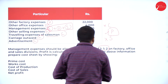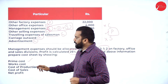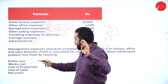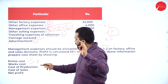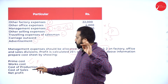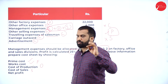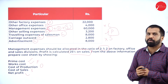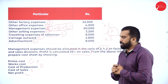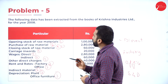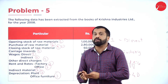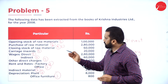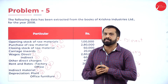From the above information, step 1 is prime cost, step 2 is work cost — work means factory. Then cost of production, which is office. Then cost of sales, which is selling and distribution. Your final answer is nothing but net profit. Please take a screenshot of the question and try to work out the problem on your own first; later you can cross-verify with the actual answer.